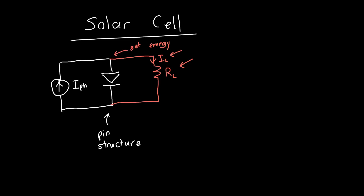Let's try different values of RL. First, let's try RL equals zero — a short circuit. The voltage across a short circuit has to be zero, so we're not applying any voltage to the diode, and all of our photocurrent is getting shunted through that branch. This is also known as the short circuit current, ISC. Short circuit current is more typically used for solar cells.